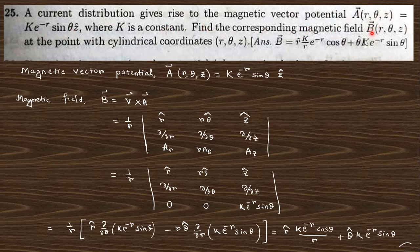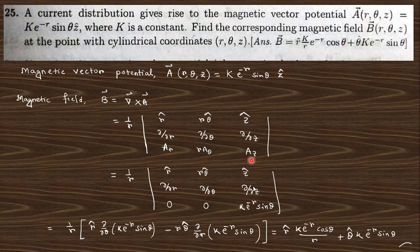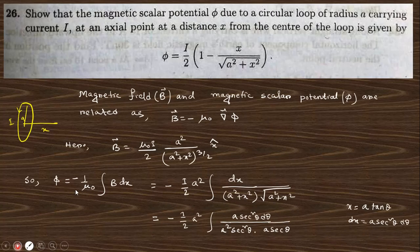Next: A current distribution gives rise to a magnetic vector potential A. Find the corresponding magnetic field. You know B = curl of A. Just take the curl of the given vector A in cylindrical coordinates. Since A is only in the z-direction, taking ∂/∂θ gives the r̂ component and ∂/∂r gives the θ̂ component. The final answer follows from evaluating those partial derivatives.